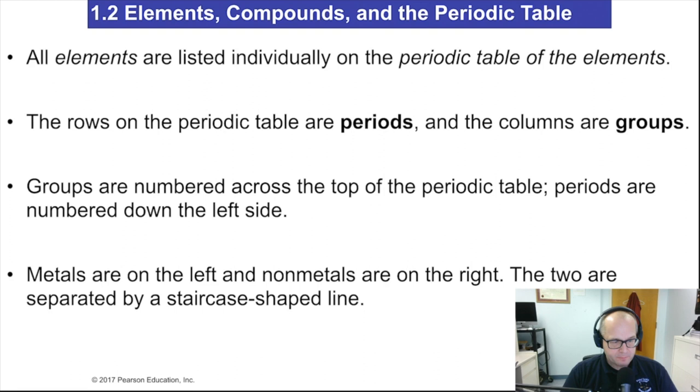This table is broken down into these things called periods and groups. Periods run left to right through the table, so they're essentially rows, and groups are columns that go top to bottom. Periods go left to right, and that's how the periodic table is broken down.